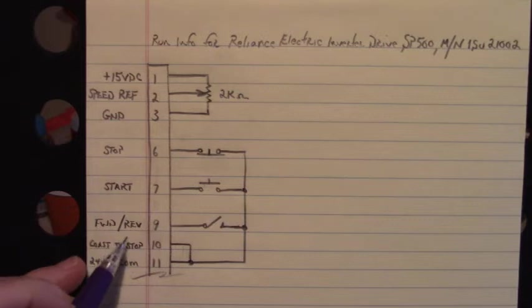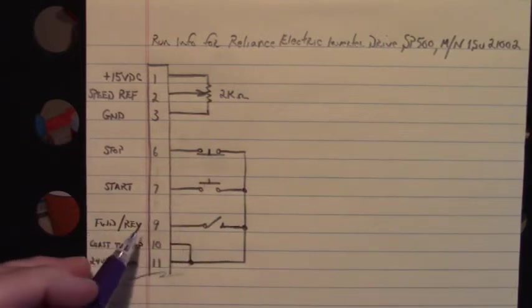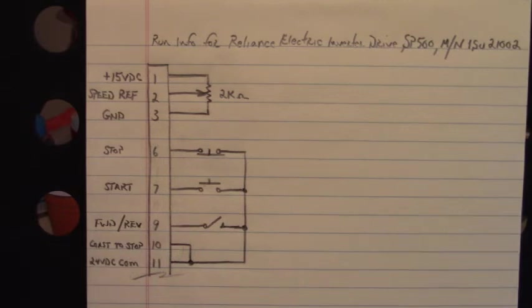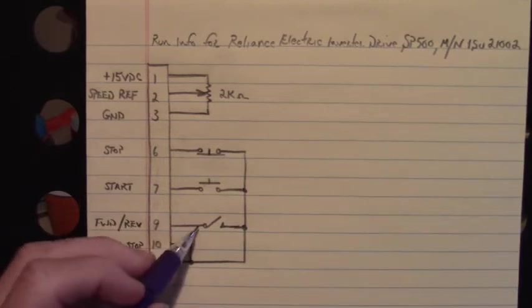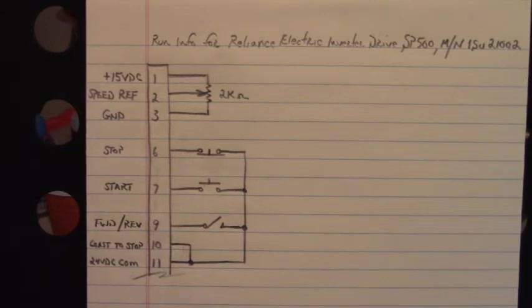The forward reverse switch open to run forward, which would be clockwise. And we close that switch to reverse counterclockwise. There you go. That's a fairly simple drive to run. Let's go down and we'll look at the power connections.